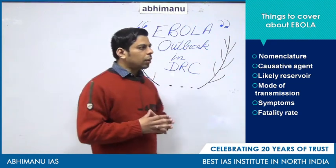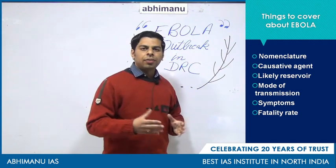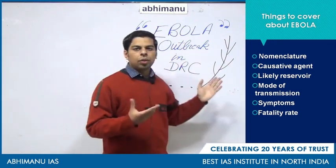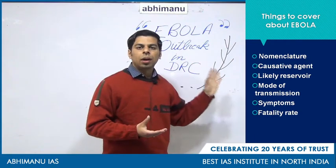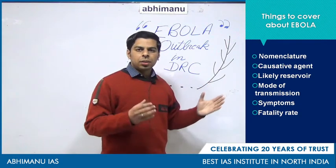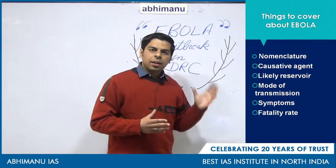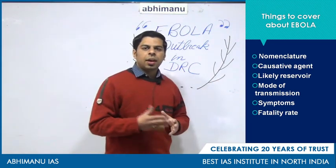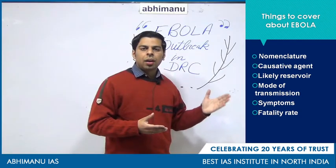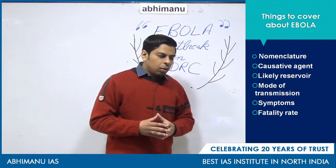Coming to the causative agent: the disease is described as Ebola Viral Fever or Ebola Hemorrhagic Fever, and the causative agent is the Ebola virus. It is an RNA virus, so you can use the term 'ribo virus' as well. Any virus which has RNA genetic material is called a ribo virus, while those with DNA are called deoxy viruses.